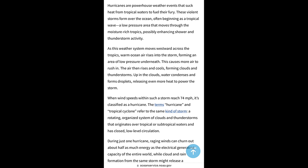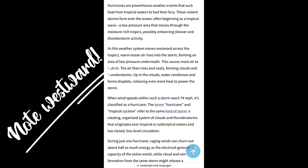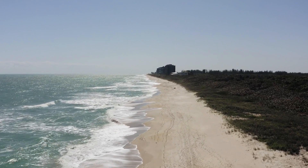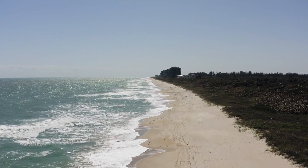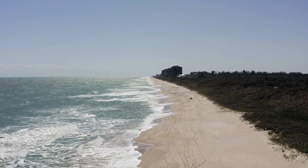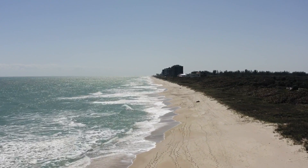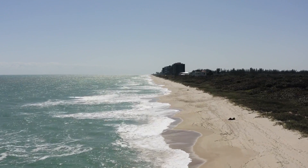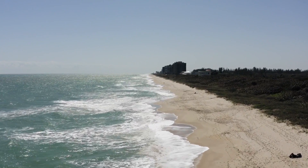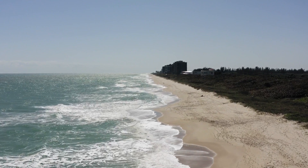As this weather system moves westward across the tropics, warm ocean air rises into the storm, forming an area of low pressure underneath. Imagine the air current moving from the tropics across from the land to the sea — as it cools, the warm water causes heat to rise, and as it rises it creates a vortex, giving the storm a spin, because it is trying to fill the available space created by the low pressure.